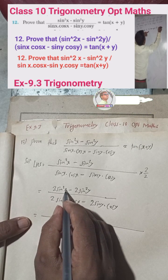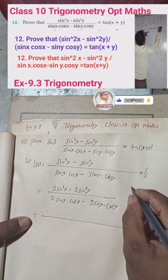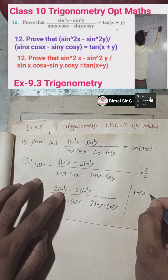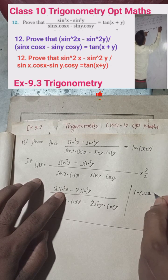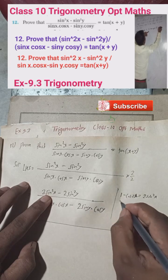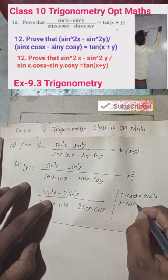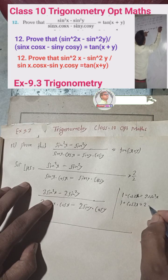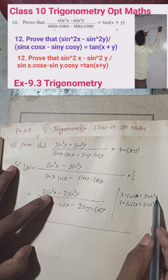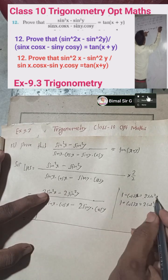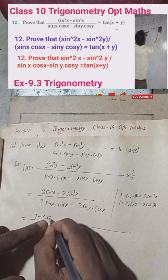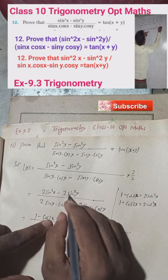Now we apply formulas. The formula is: 2sin²x = 1 − cos2x. So 2sin²x becomes 1 − cos2x, and similarly 2sin²y becomes 1 − cos2y. This is because if the angle is x, then double the angle is 2x.